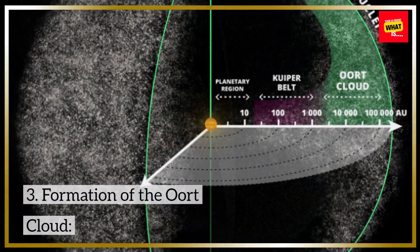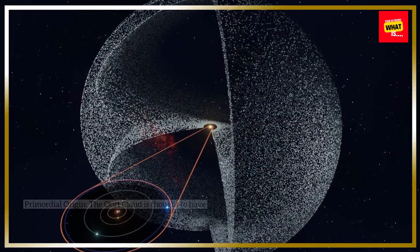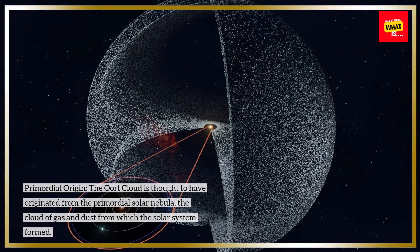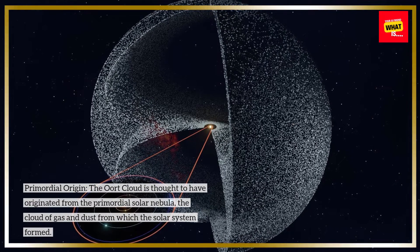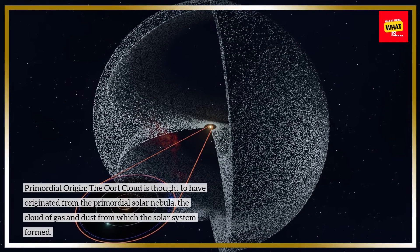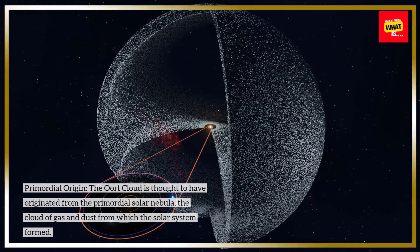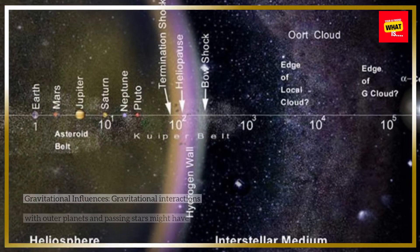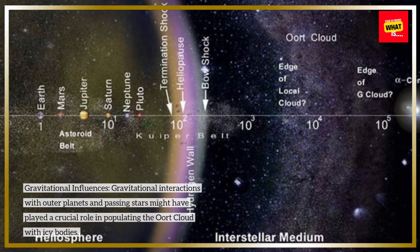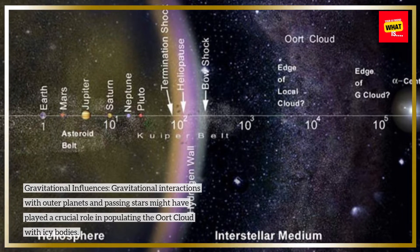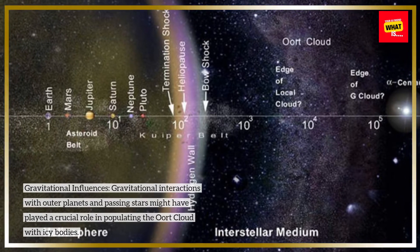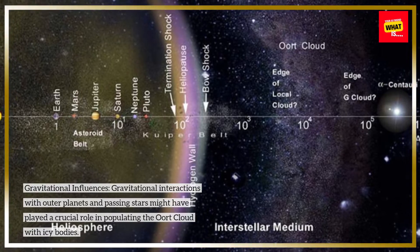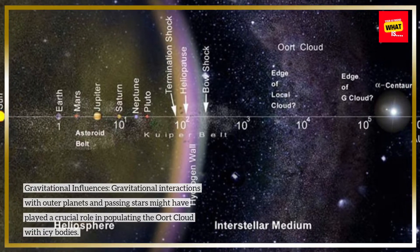Formation of the Oort Cloud. Primordial Origin: The Oort Cloud is thought to have originated from the primordial solar nebula, the cloud of gas and dust from which the solar system formed. Gravitational Influences: Gravitational interactions with outer planets and passing stars might have played a crucial role in populating the Oort Cloud with icy bodies.